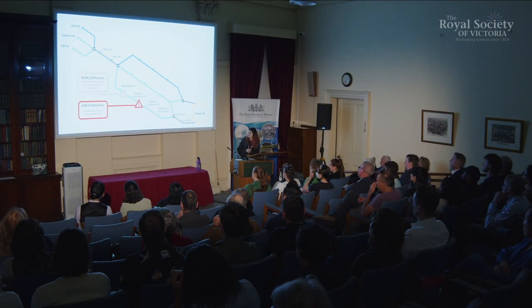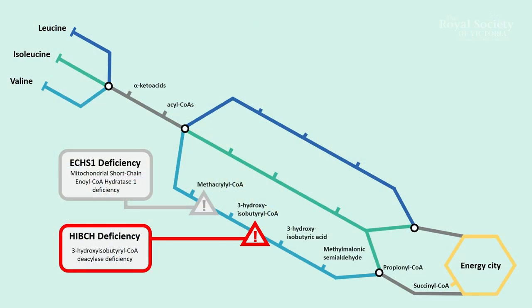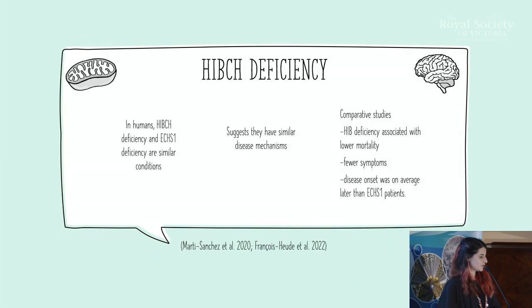So jumping ahead to HIBCH deficiency, as I'll call it for short. They have very long chemical enzyme names. So in humans, HIBCH deficiency and ECHI1 deficiency are fairly similar conditions that have a lot of overlap in their collection of symptoms, suggesting that they might have some similar disease mechanisms, and they are side by side in that pathway after all. So comparative studies of patient cohorts showed that HIBCH deficiency patients had lower mortality, fewer symptoms, and that disease onset was a bit later.